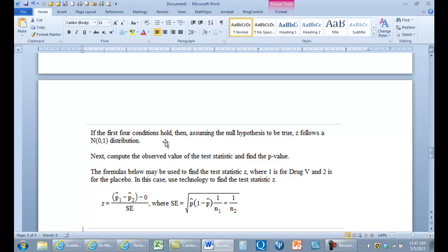Let's go down here. If the first four conditions hold, then assuming the null hypothesis to be true, Z follows a normal distribution with mean of 0, standard deviation of 1. This is what N01 means, is, if we can have a Z following this distribution, then we can answer the question.